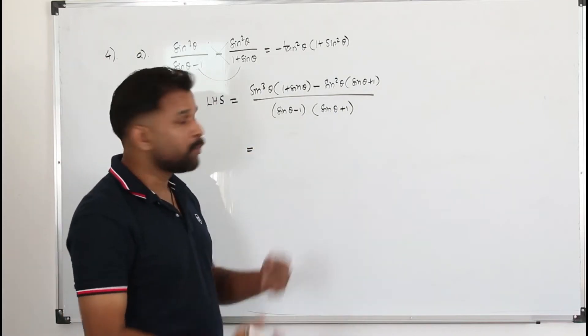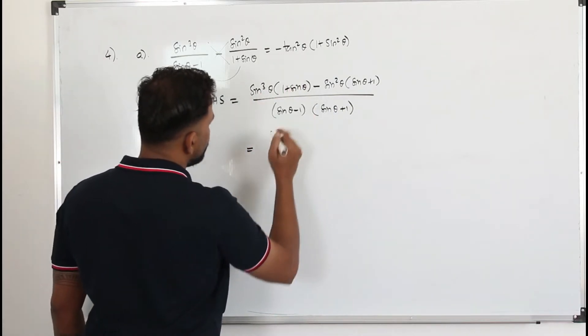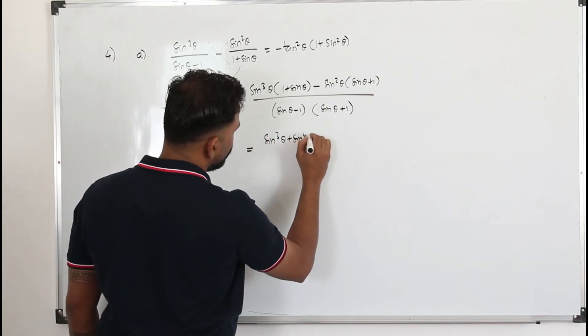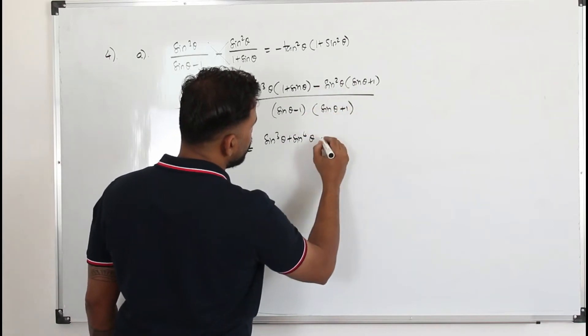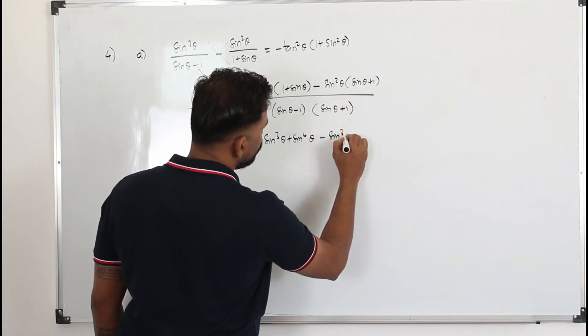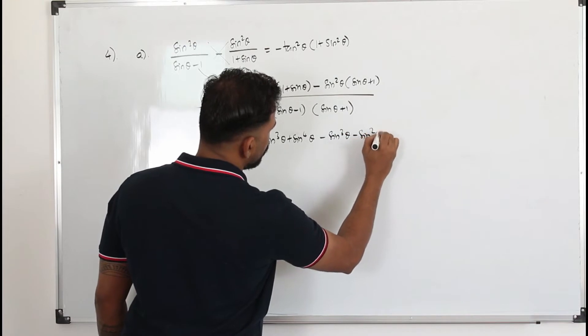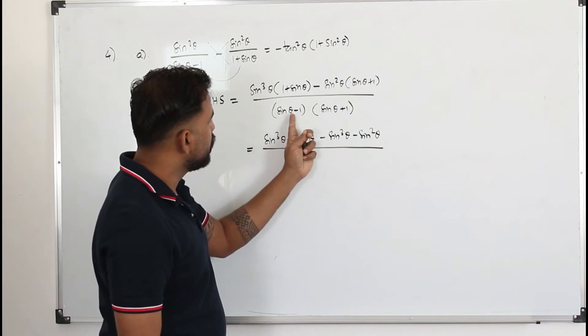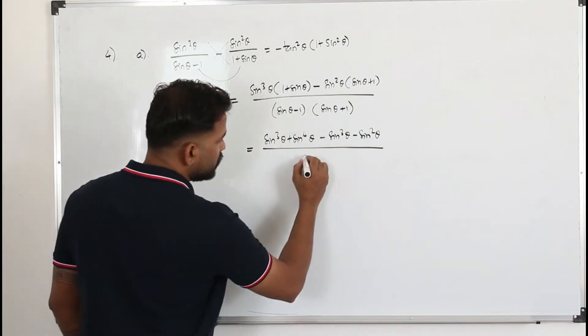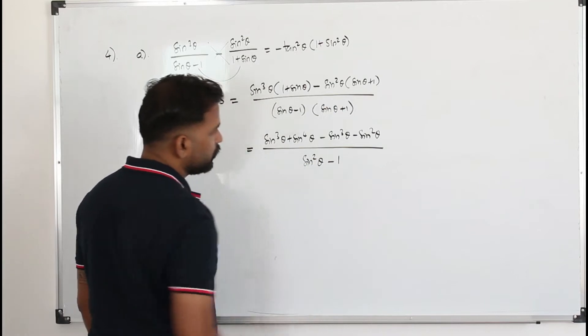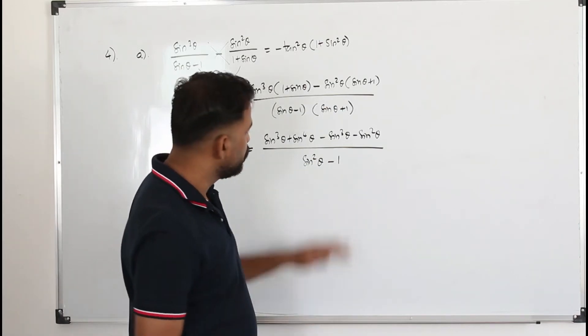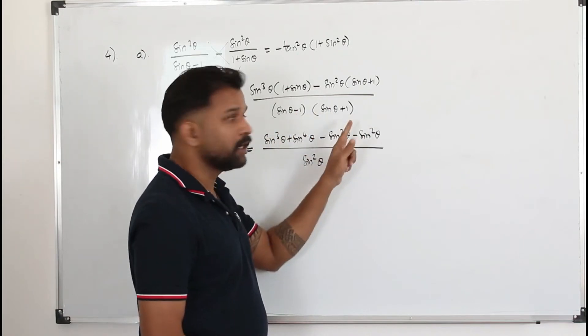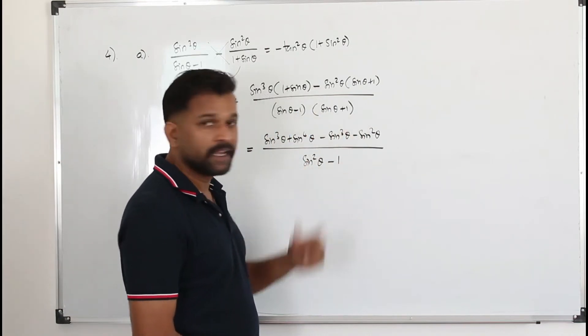Now we just need to open the bracket and simplify. So we get sin³θ + sin⁴θ. Take negative sin²θ and multiply both. You'll get -sin³θ - sin²θ. Here we have (a + b) times (a - b). Remember the algebraic identity a² - b². 1² is 1. If you don't want to apply this, open the bracket. Take sinθ, multiply both. Take negative 1, multiply both. You will still get this expression.